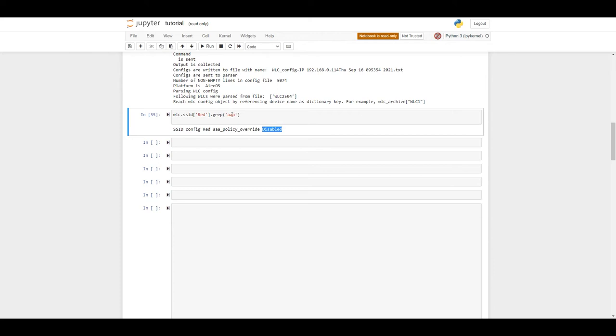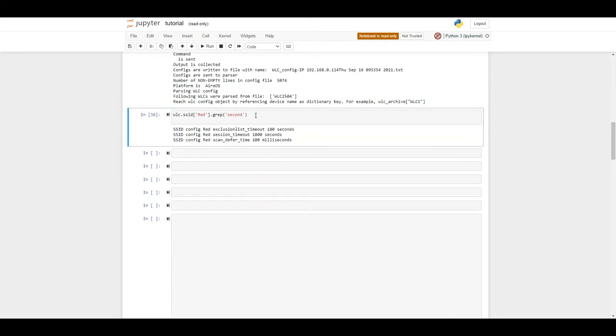Let's try one more example. Now, we can try to see if we have any timeouts configured in this SSID. And here is a little trick. Usually, timeouts are measured in seconds. So, we will just try the second to grep. Press Enter. And now, we can see that the values for timeouts like session timeout configured in this SSID.